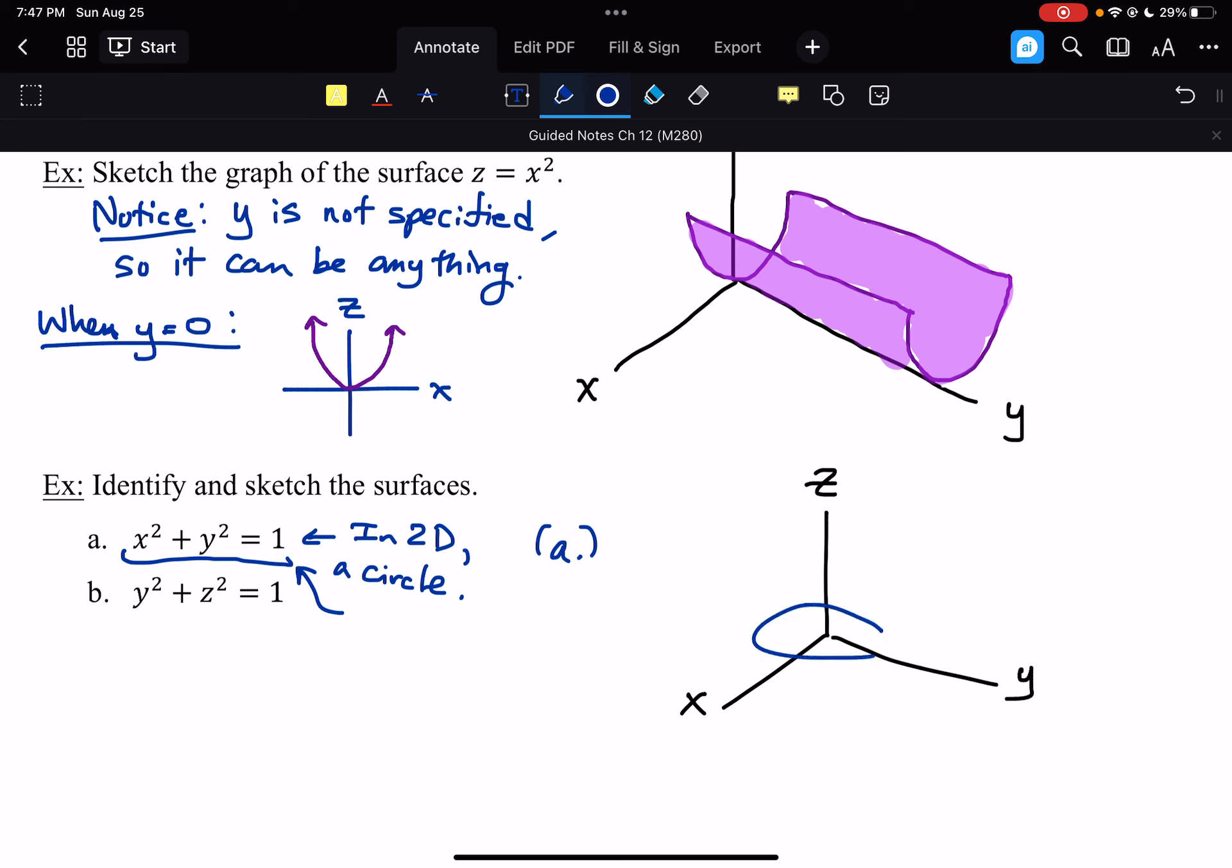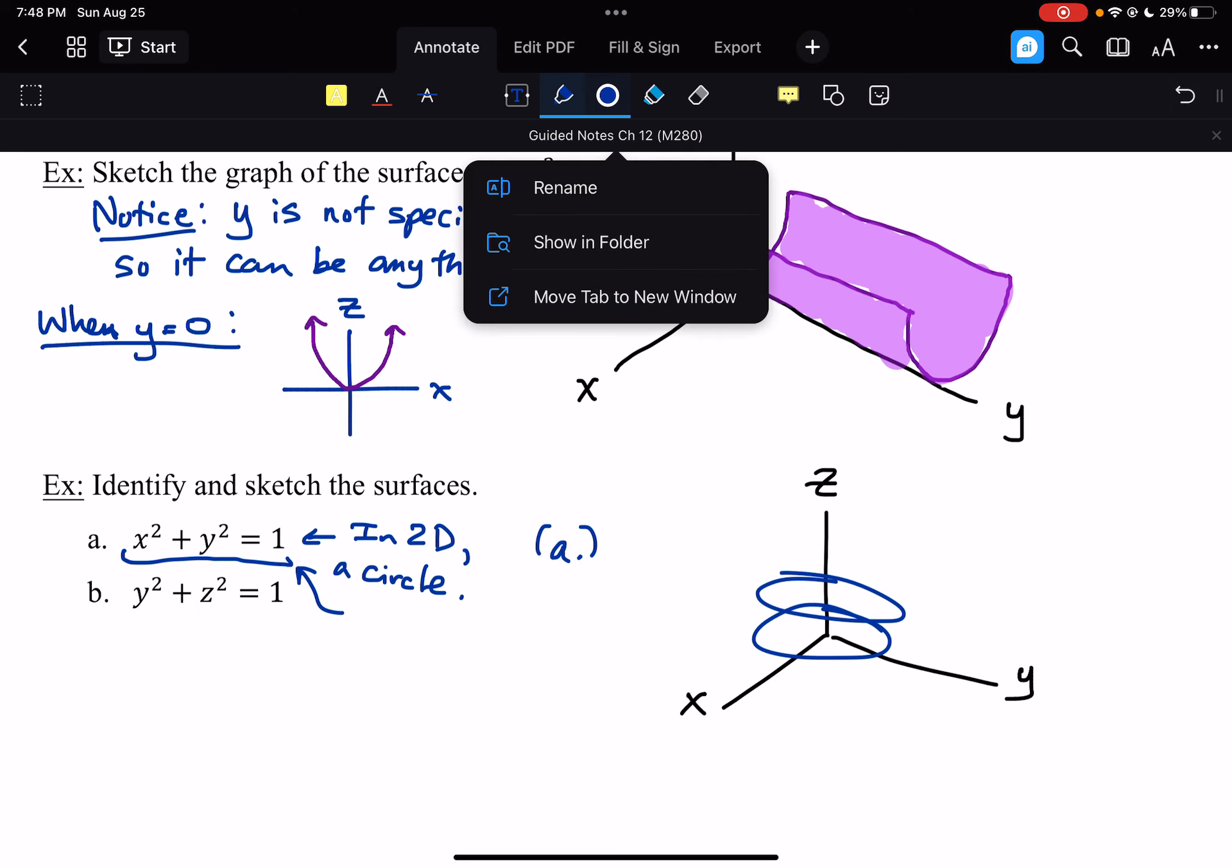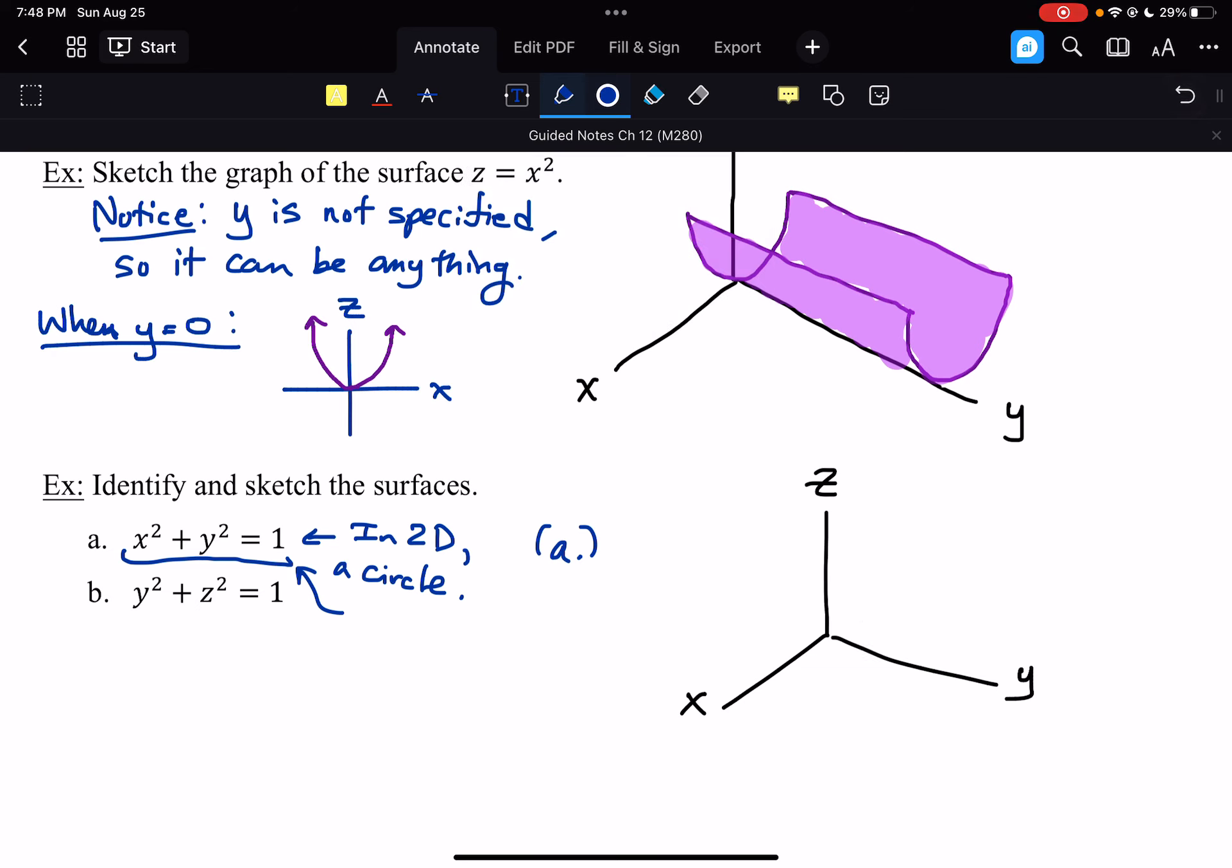So that means you take that circle for z equals 0, z equals 1, 2, 3, 4, 5, etc. Just trace out those infinitely many circles in both directions. And in 3D, we end up getting a cylinder.